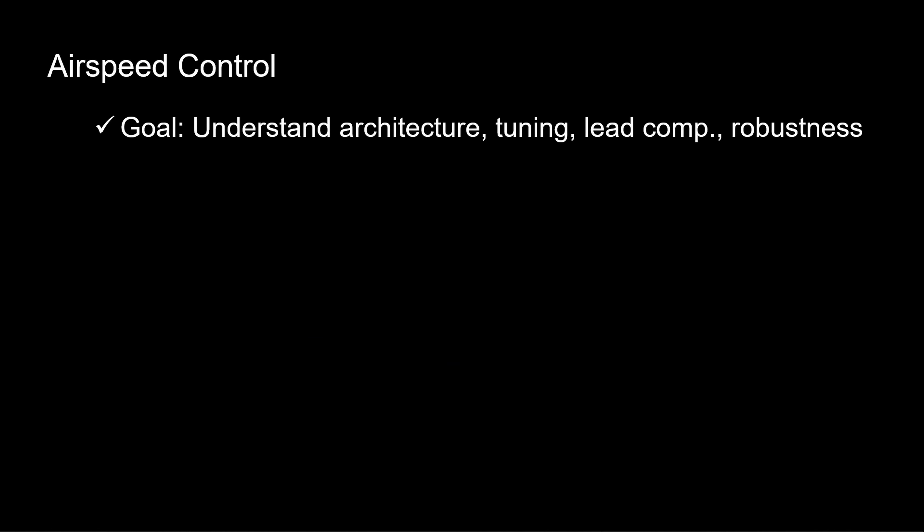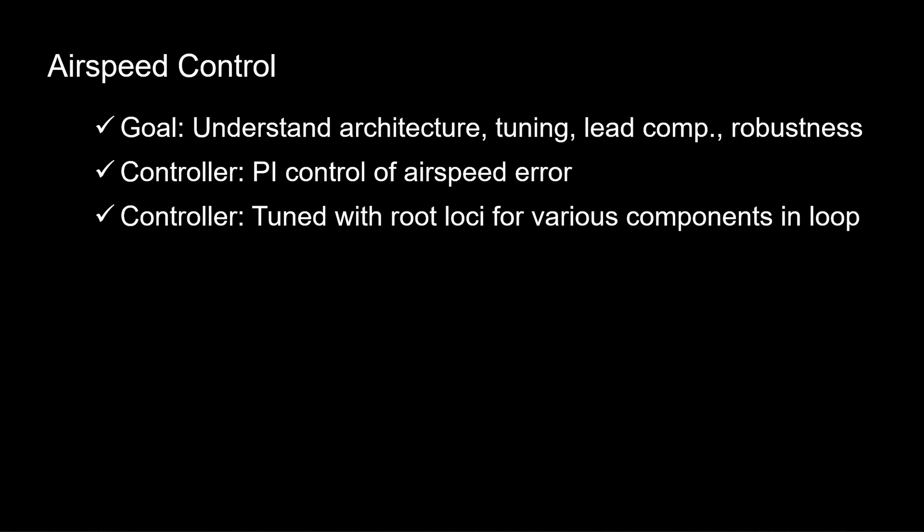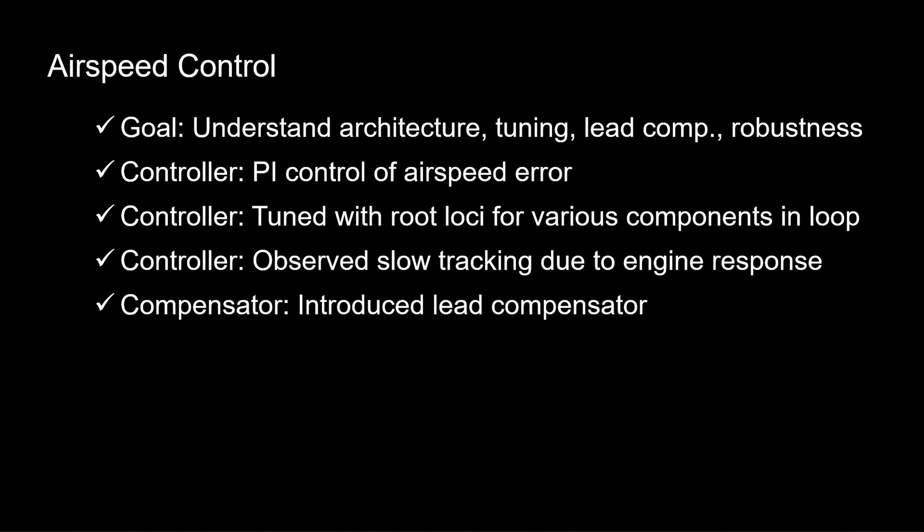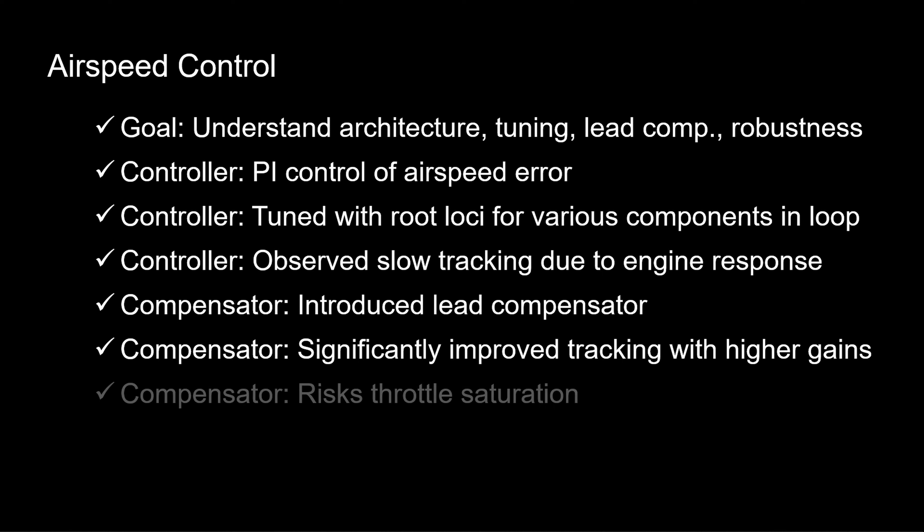Here we focused on airspeed control. We sought to understand the architecture, how to tune it, the use of lead compensation to correct for a slow engine response, and effective lead compensation on robustness. Our control architecture was a proportional integral system. We tuned root loci for various components in the loop and observed slow tracking, ultimately due to a slow engine response. So we introduced that lead compensator and significantly improved tracking while allowing higher gains. We risked throttle saturation, so we backed off the gains a bit, but still had excellent performance and additional robustness in the sense of additional phase margin and vector margin.